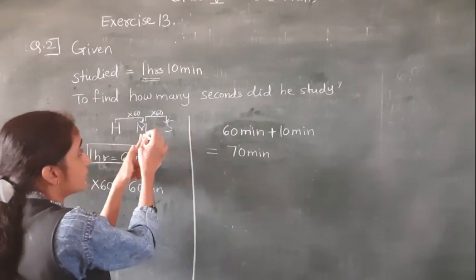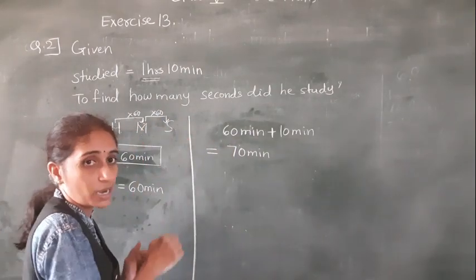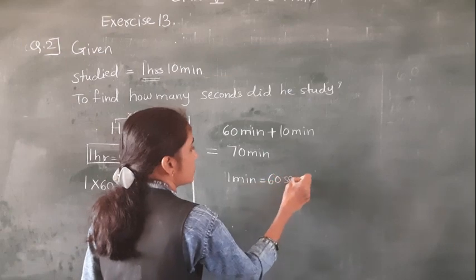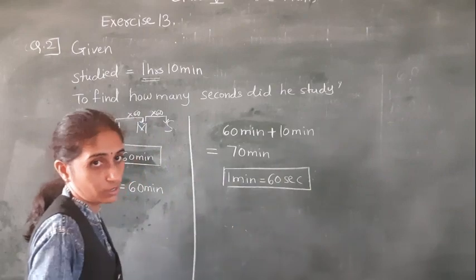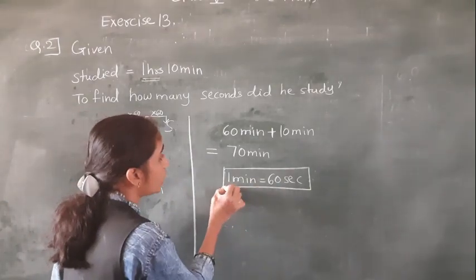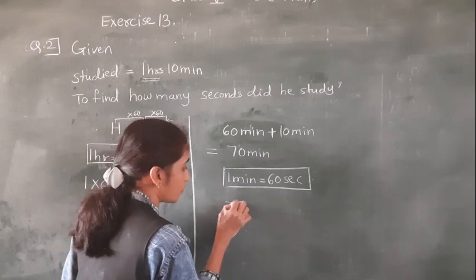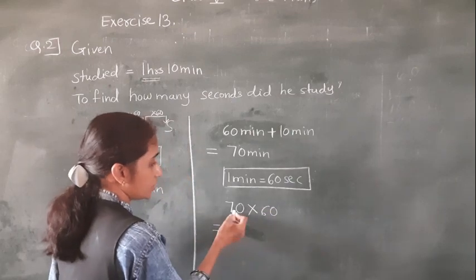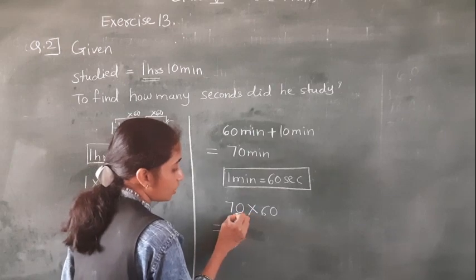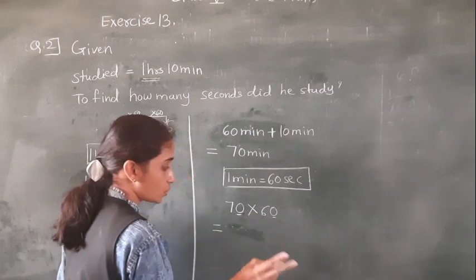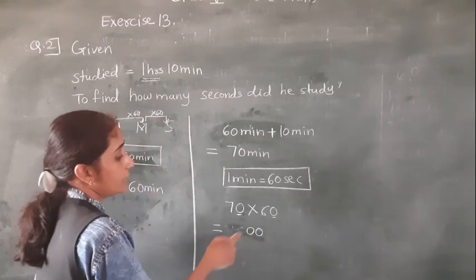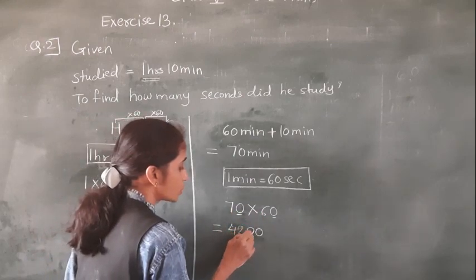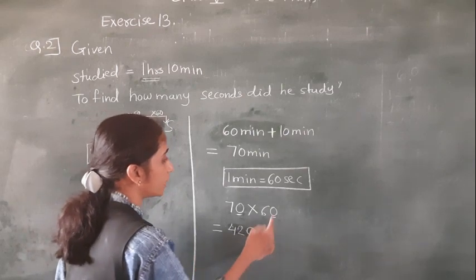Minutes we need to convert into seconds — multiply by 60. 1 minute is equal to 60 seconds. So how many minutes are here? 70 minutes. So 70 × 60. Let's do this multiplication: 0 × anything = 0, then 7 × 6 = 42. So the answer is 4,200 seconds.